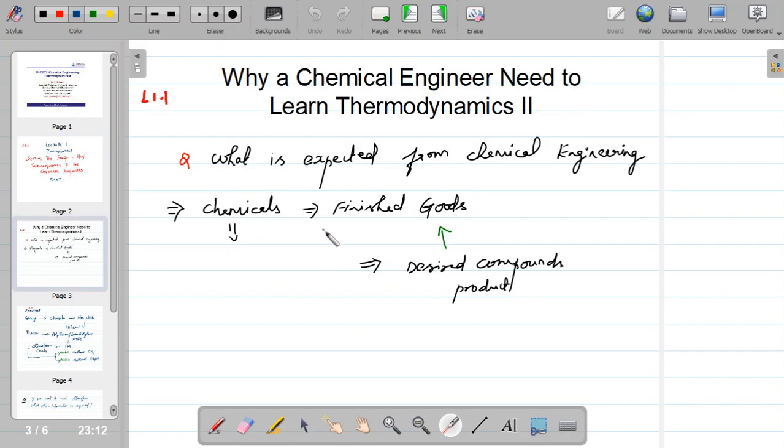So let's go to the question and try to unearth why a Chemical Engineering student, why an aspiring Chemical Engineer needs to learn Thermodynamics 2. To understand this question, it is very important for us to know what is the objective or function of a chemical engineering discipline at large for human society.